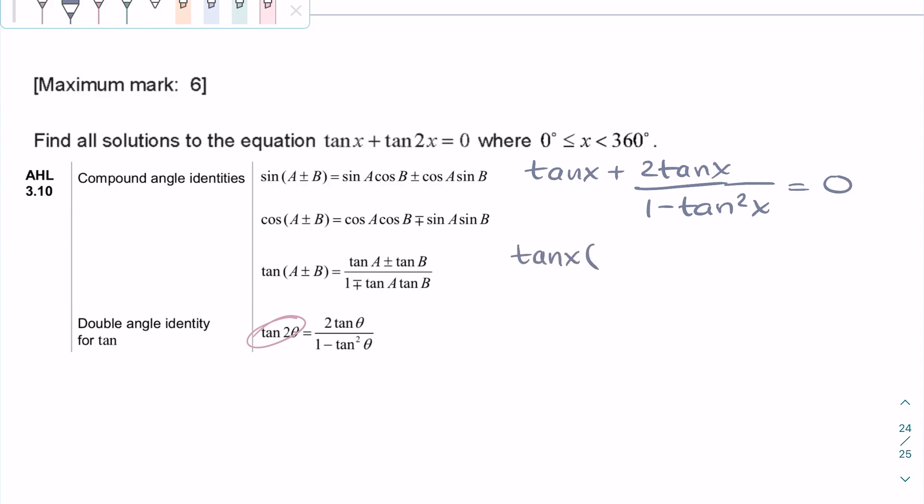So we can rewrite it as 2 tan x over 1 minus tan squared x. Now we can combine the fractions by multiplying tan x by the denominator, so 1 minus tan squared x.